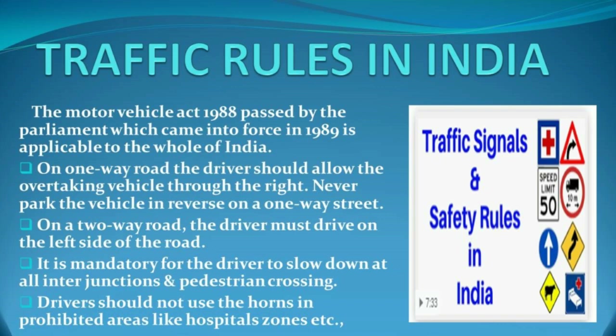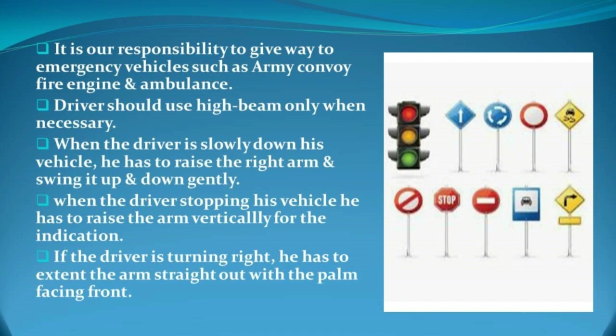Traffic rules in India: The Motor Vehicle Act 1988, passed by parliament, came into force in 1989 and is applicable to the whole of India. On a one-way road, the driver should allow overtaking vehicles through the right. Never park in reverse on a one-way street. On a two-way road, the driver must drive on the left side. It is mandatory to slow down at all junctions and pedestrian crossings. Drivers should not use horns in prohibited areas like hospital and school zones. It is our responsibility to give way to emergency vehicles such as army convoy, fire engine, and ambulance.